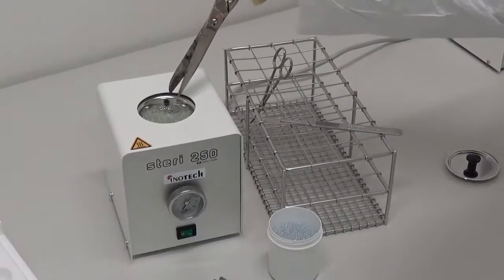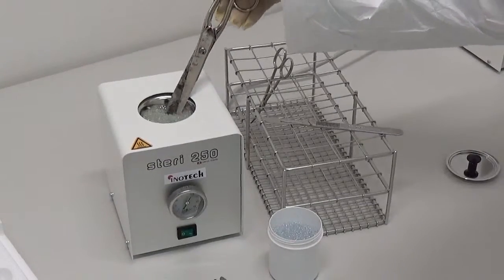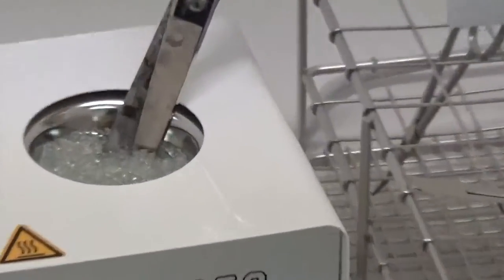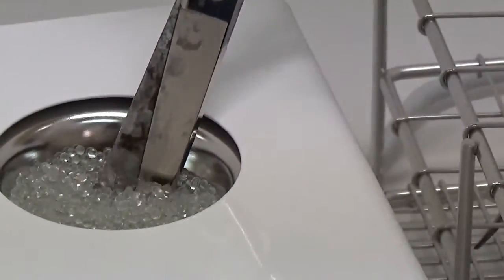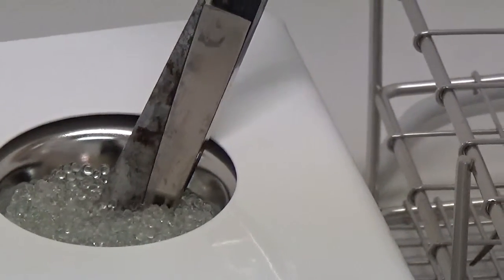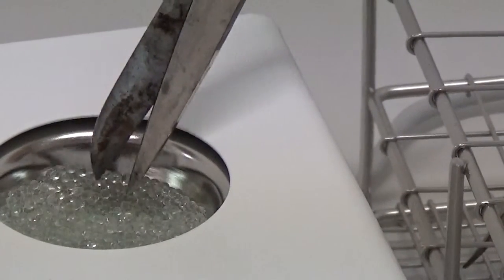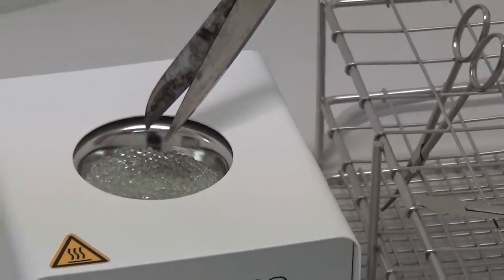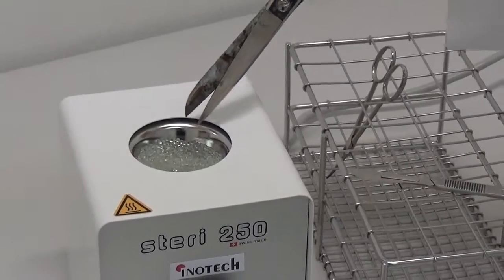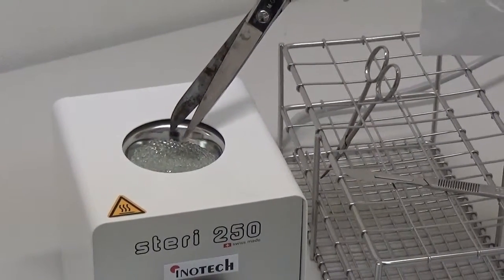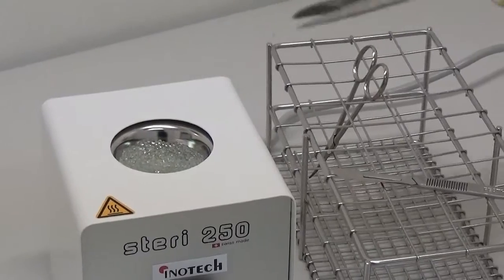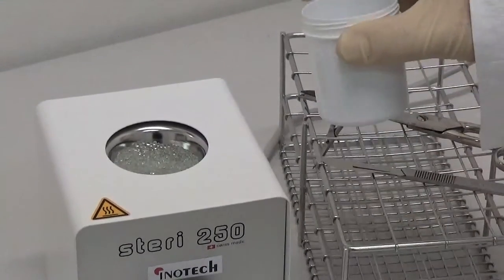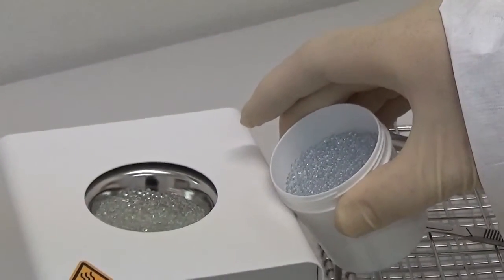When you insert dirty instruments into the sterilizer, the dirt will be baked on the instruments and stick to the beads. Beads which have a deposit on it will turn brownish and do not transfer heat as efficiently as necessary. It is therefore recommended to replace the glass beads when they become discolored.